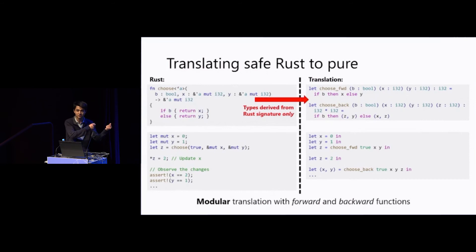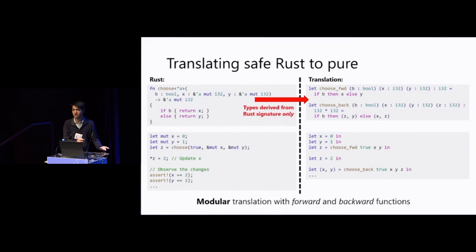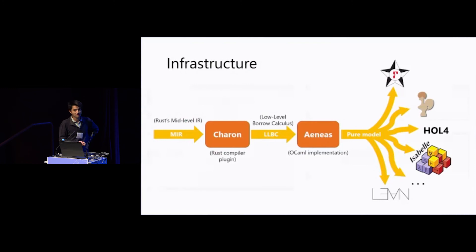For every borrow returned, upon ending lifetime alpha you need to give back a value. Here we have one borrow of type i32, so we take one additional input of type i32. 'choose_backward' then returns updated values for what was loaned — here two borrows x and y, so we return a pair of the corresponding types. This modular translation is particularly useful for handling external dependencies or functions using unsupported features, treating them as opaque declarations.